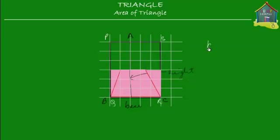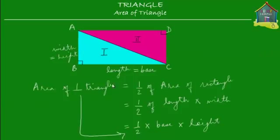So if the area of the rectangle is base times height, then the area of the triangle is half of base times height. And this is the same as what we saw before — the area of a right angle triangle is also half of base times height. You can take any triangle and prove that its area is half of the area of the rectangle made by its base and height.